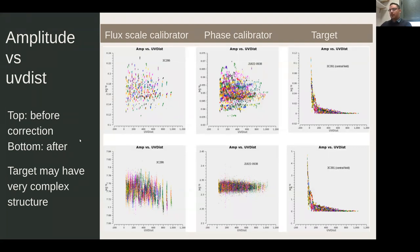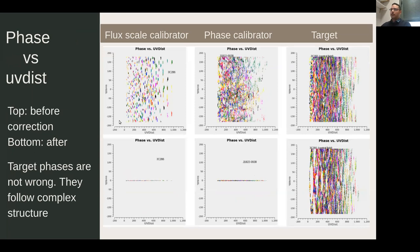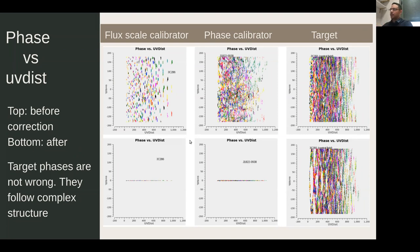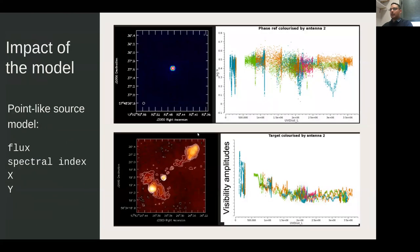The target may have a lot of emission on short baselines indicating extended emission. This is much more complex than a simple point-source assumption. For calibrators, phases should be near zero, but for a target the phases can be a mess — this is the real structure of the source. If you have a complex source the visibility amplitude as a function of UV distance can be very complex.